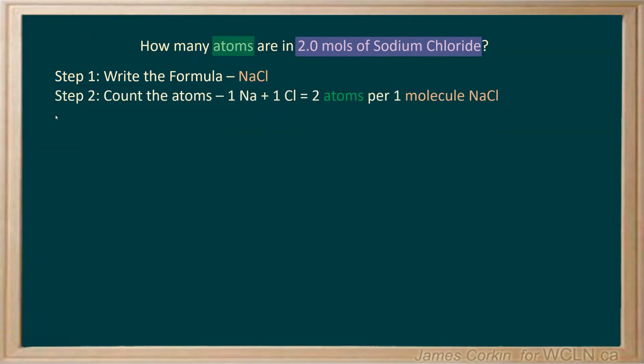You then want to count the atoms in the formula. We have 1 sodium and 1 chlorine, so that's a total of 2 atoms per 1 molecule of sodium chloride. Or phrased another way, for every 1 molecule of sodium chloride, there are 2 atoms.